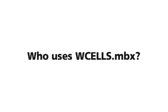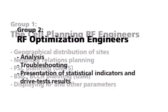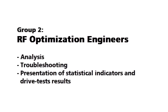People using Wcells broadly belong to one or more of three groups. First, the RF planning engineers dealing with the geographical distribution of mobile telephony sites, neighbor relations planning and PSC planning in UMTS, or BSIC-BCCH planning in GSM, or interested in displaying RF parameters and neighbor relations in MapInfo. The second group are RF optimization engineers dealing with analysis, troubleshooting, and presentation of statistical indicators and drive test results against network settings.